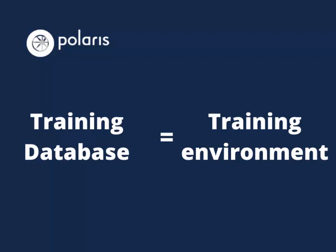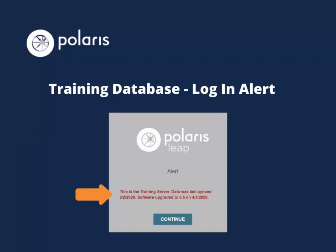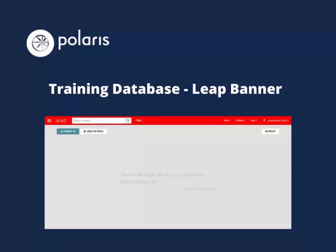We will be working in the training version of Polaris during these courses. When using Leap, there are a couple of ways you can tell you're using the training version. First, make sure you see "training" in the URL. Second, when logging in, an alert will tell you when the data was last synced with the production database. Keep in mind that when working in training Leap, the data will likely be outdated — don't worry if you see old checkouts on your record. Finally, once you're logged in, you'll see the banner in training Leap is red instead of the standard blue banner.